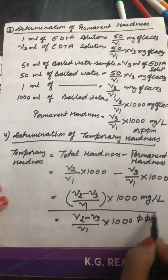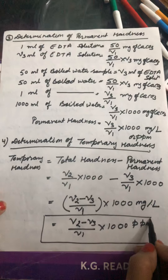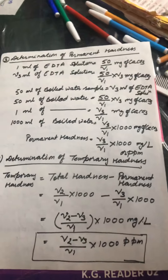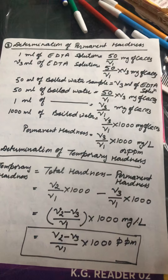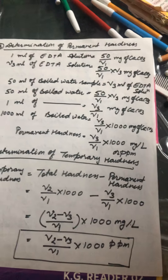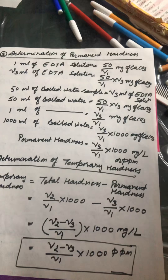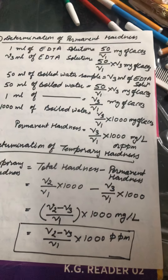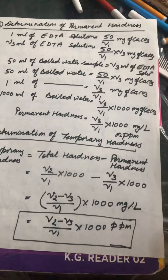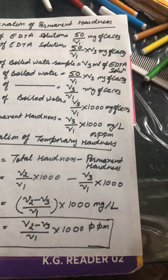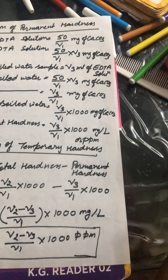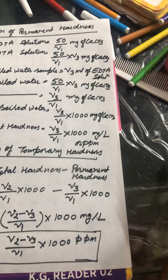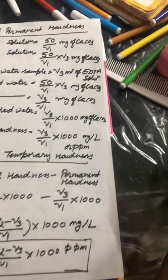To conclude the topic of EDTA, the topic is divided into three parts: first, the principle of the EDTA method; second, the procedure, which is subdivided into preparation of solutions and the titration process; and third, the calculation part.